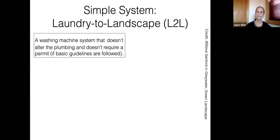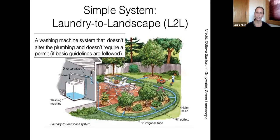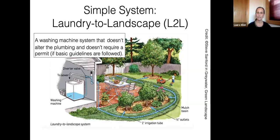Here's an overview of the system — called laundry to landscape, invented by Art Ludwig of Oasis Design. It's from the washing machine and doesn't alter the plumbing. Your machine has a pump that pushes water through a discharge hose. We redirect that water to a diverter valve with a red handle that lets you control the flow — it can either go back to the sewer or out to your graywater system. When it's going back to the sewer, literally nothing has changed about your home.